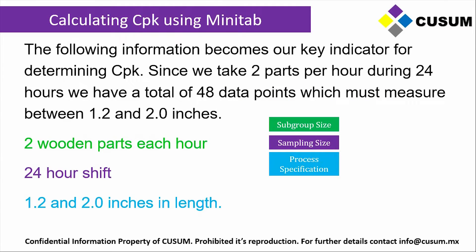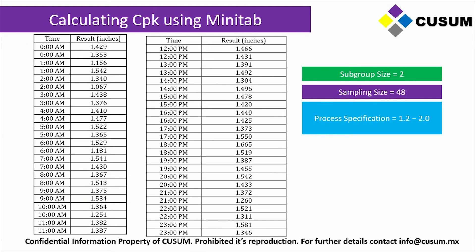Since we're taking two parts per hour during a 24-hour shift, we have a total of 48 data points which must measure between 1.2 and 2 inches. We can grab our data — we now have 48 different data points. Note how we're creating a table that contains a time column and a results-in-inches column. We want to be able to backtrack at what time we took those samples.